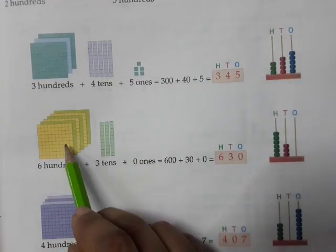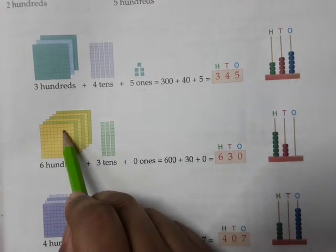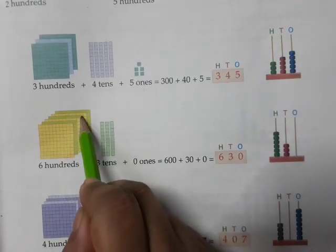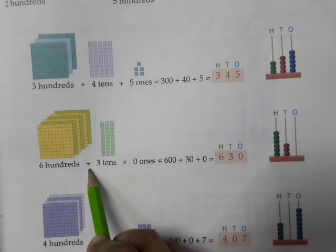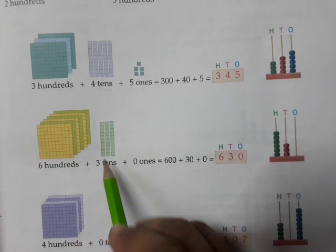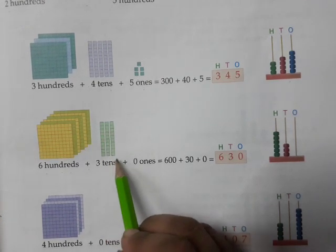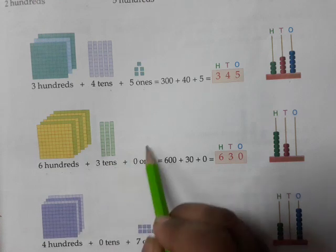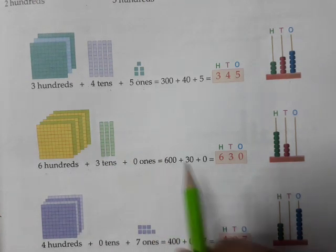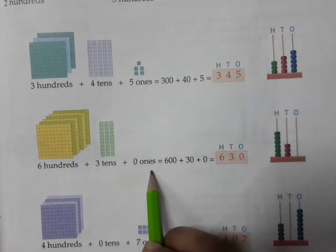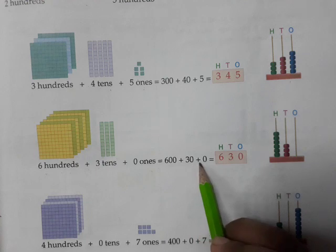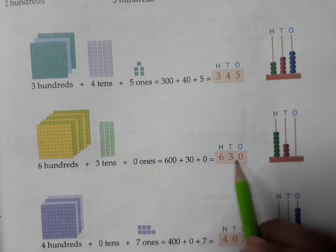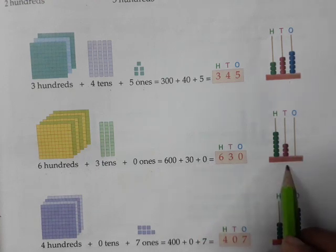Here, 100 blocks: 100, 200, 300, 400, 500, 600 — so 600. Do not forget to write the plus symbol. One ten, two tens, three tens — as it is more than one, we write 'tens' with an S: three tens. There are zero ones. In figure form: 6-0-0, which is 600, plus 30, plus zero, that is 630. In the abacus we write it this way.